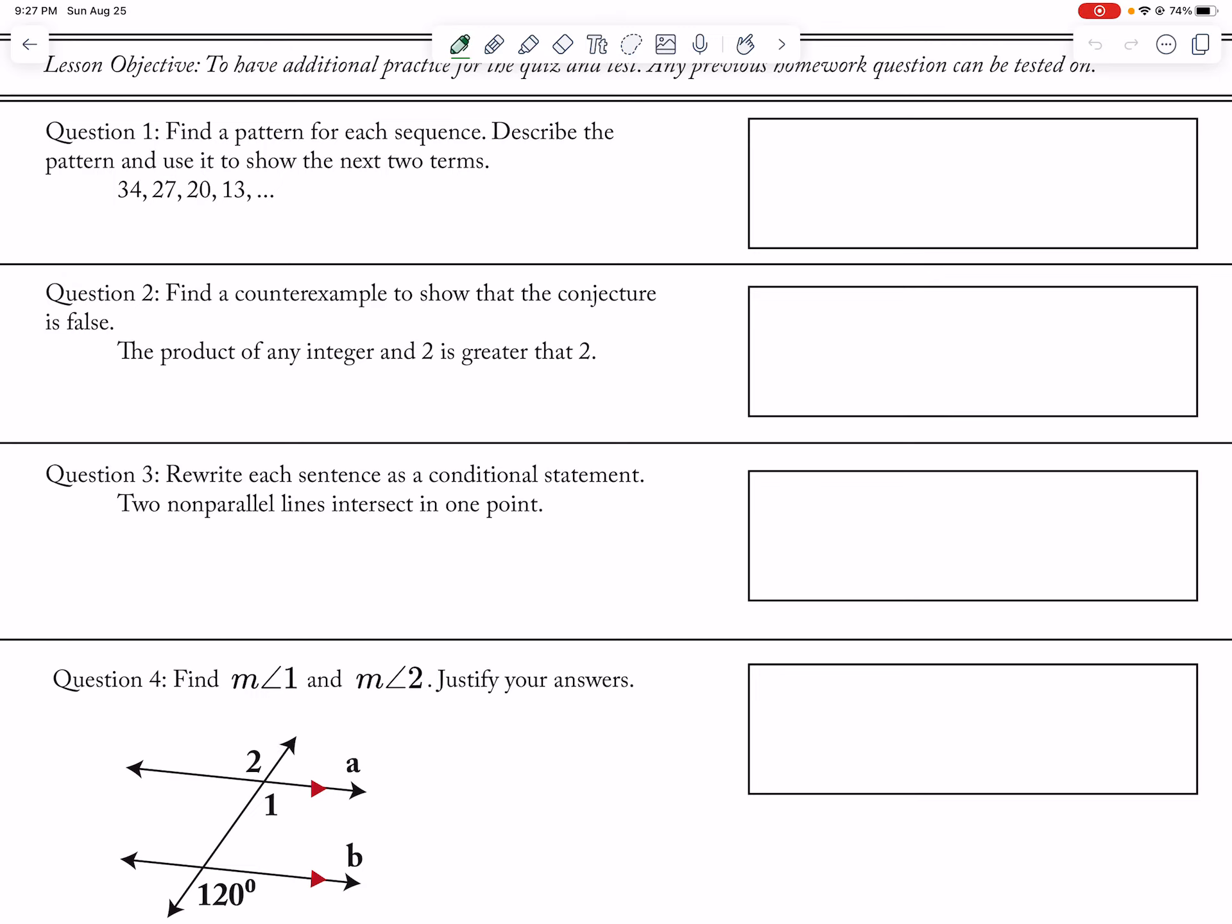Alright, so let's go ahead and take a look at this review assignment. The pattern for question 1 is subtracting 7, so your next two terms would be 6 and negative 1.